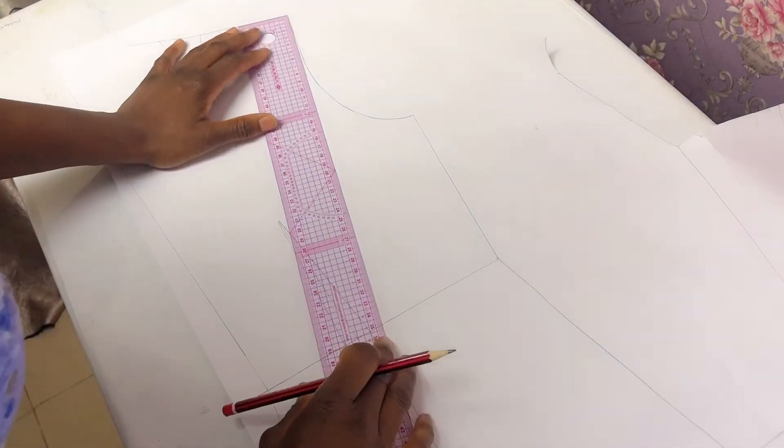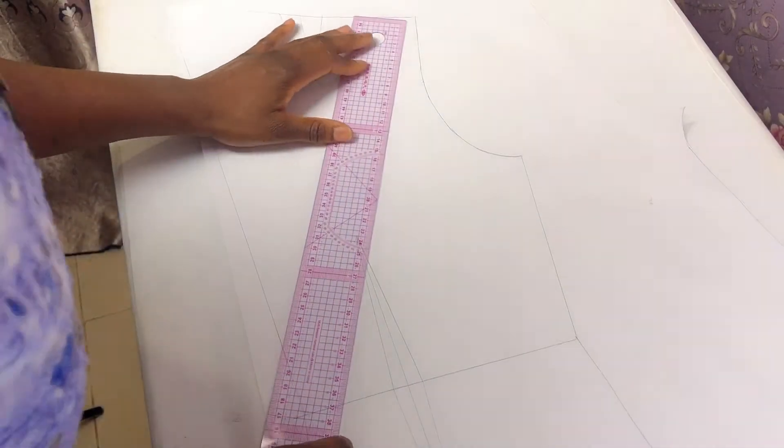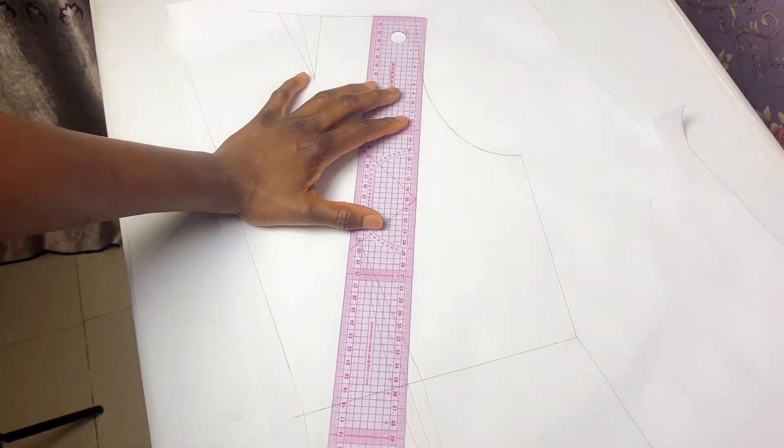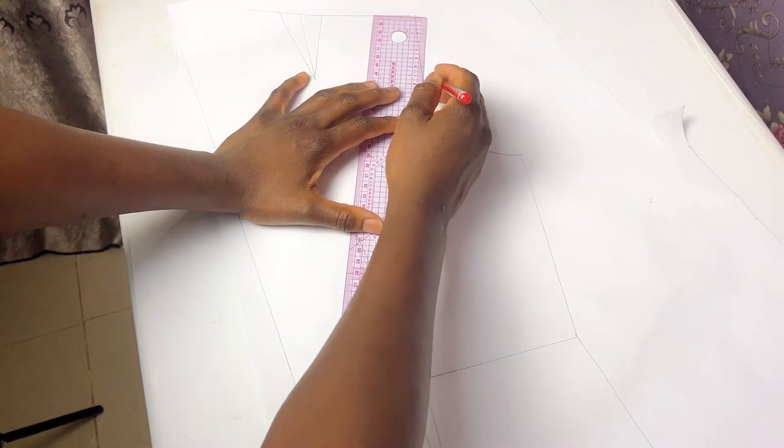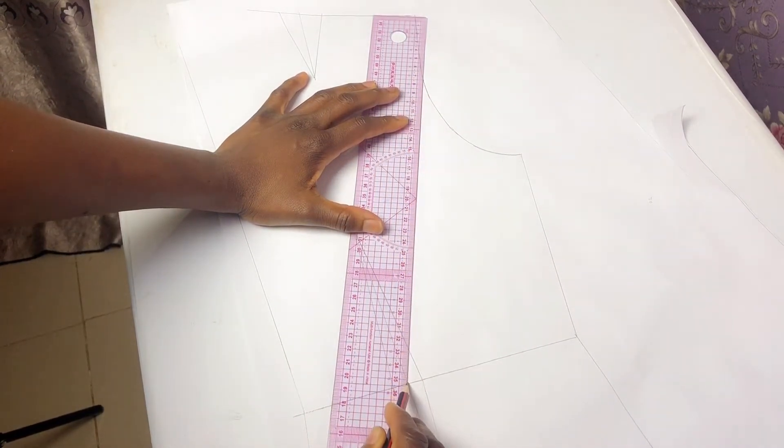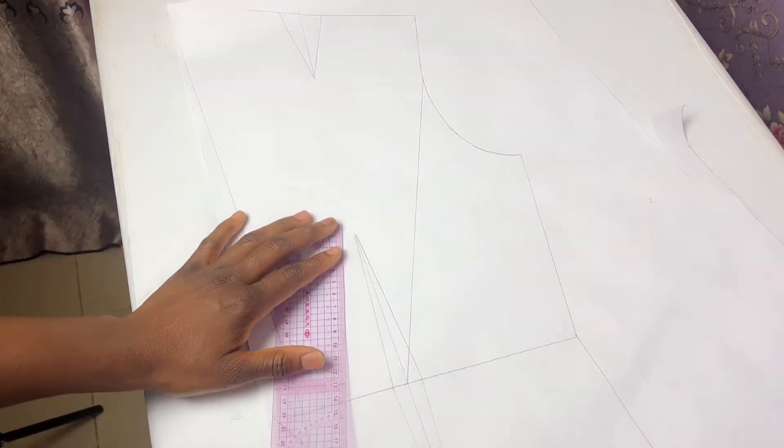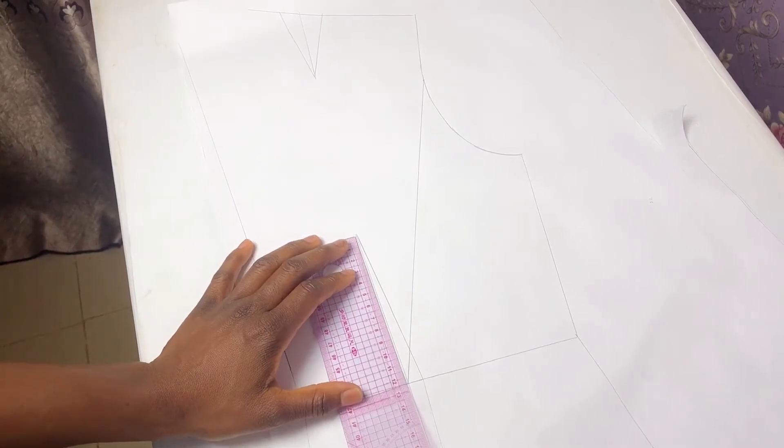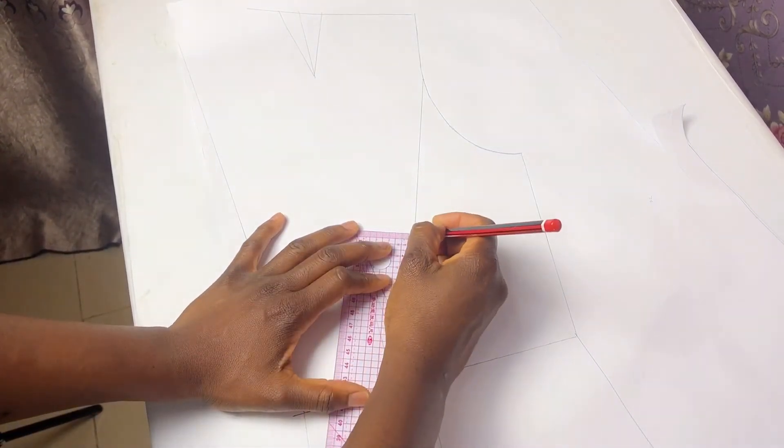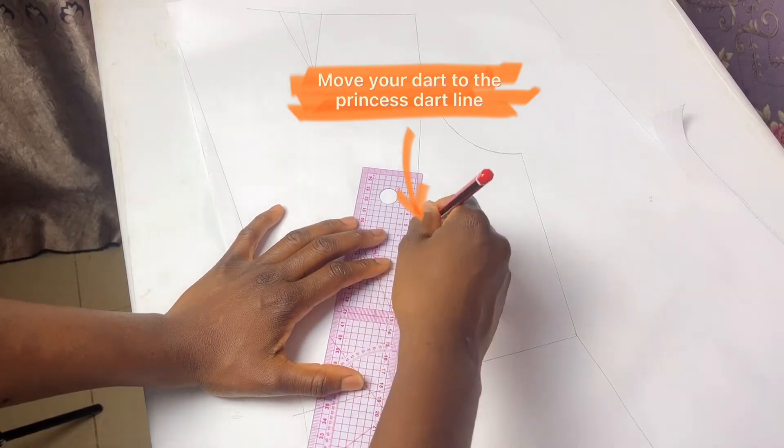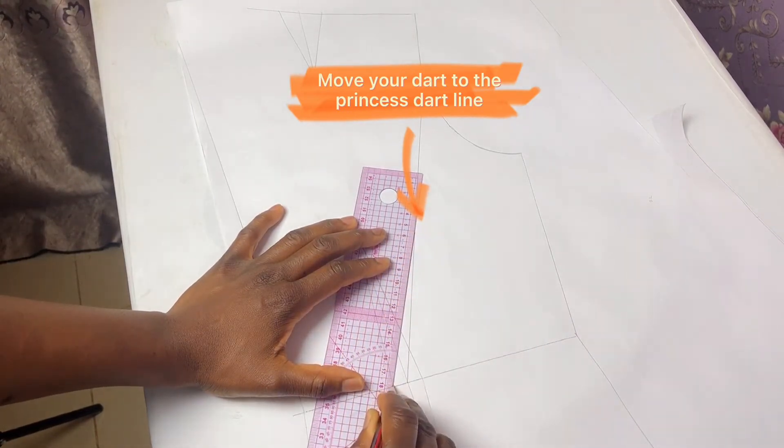For the back pattern I marked the same 8cm from shoulder point along the armhole that I marked for the front. Then I connected from that mark to the mid waist dart leg. After which I measured the length of my dart on that new line.